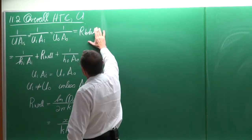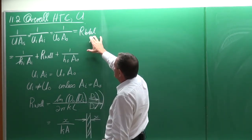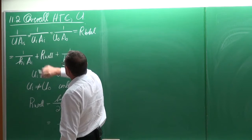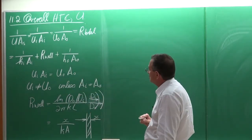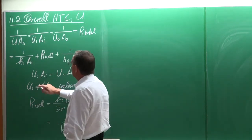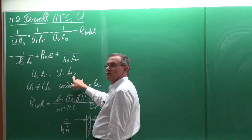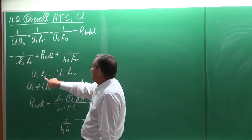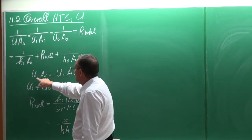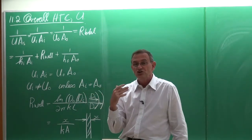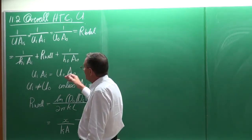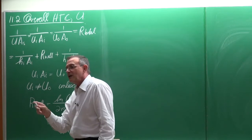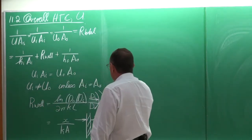In terms of deriving U, it comes from the total resistance. The resistance can be written as the resistance of the inside heat transfer coefficient, the resistance of the wall, and the resistance of the outside heat transfer coefficient. In general, U multiplied by the area on the inside equals U multiplied by the area on the outside. Normally these two are not the same, except when the areas are equal. It's very important to always ask whether U is based on the inside or outside area.